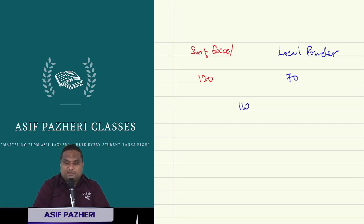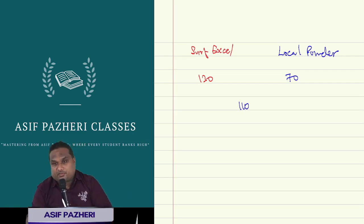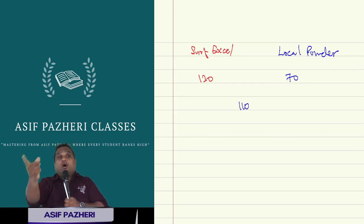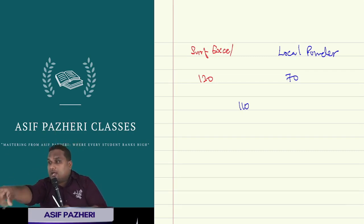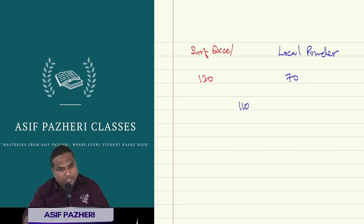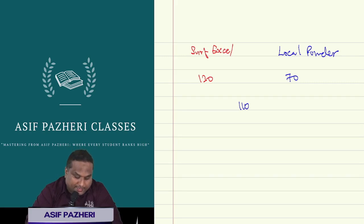This man consulted you. He is saying: Rs. 130 per kg Surf Excel needs to be mixed with Rs. 70 per kg local soap powder. In what ratio should I mix so that my cost is Rs. 110? Everybody understood the scenario?